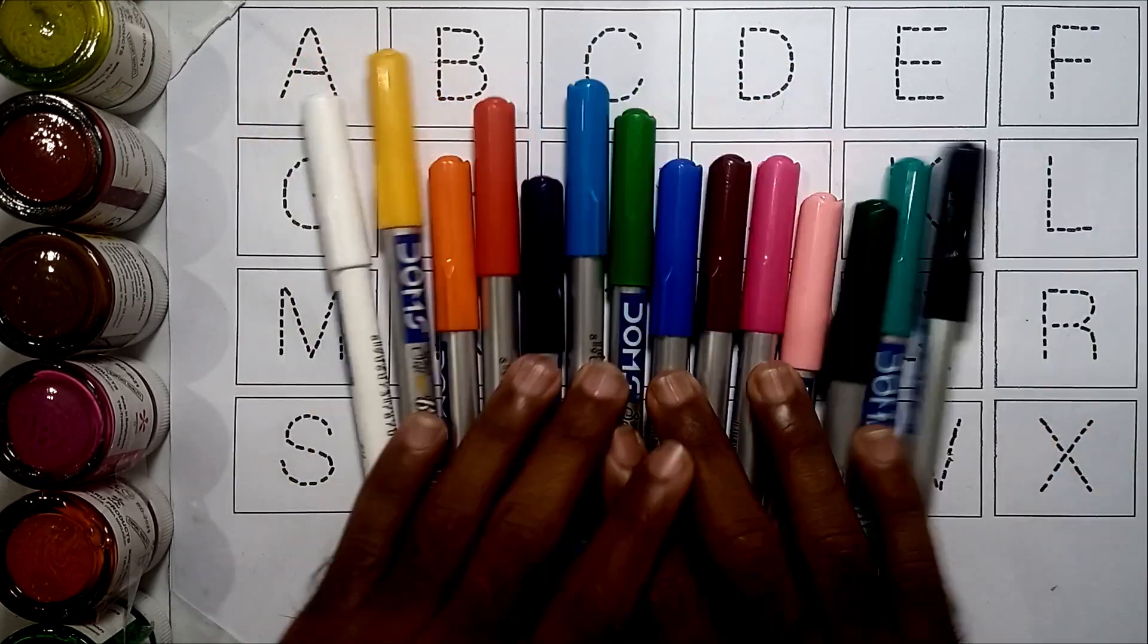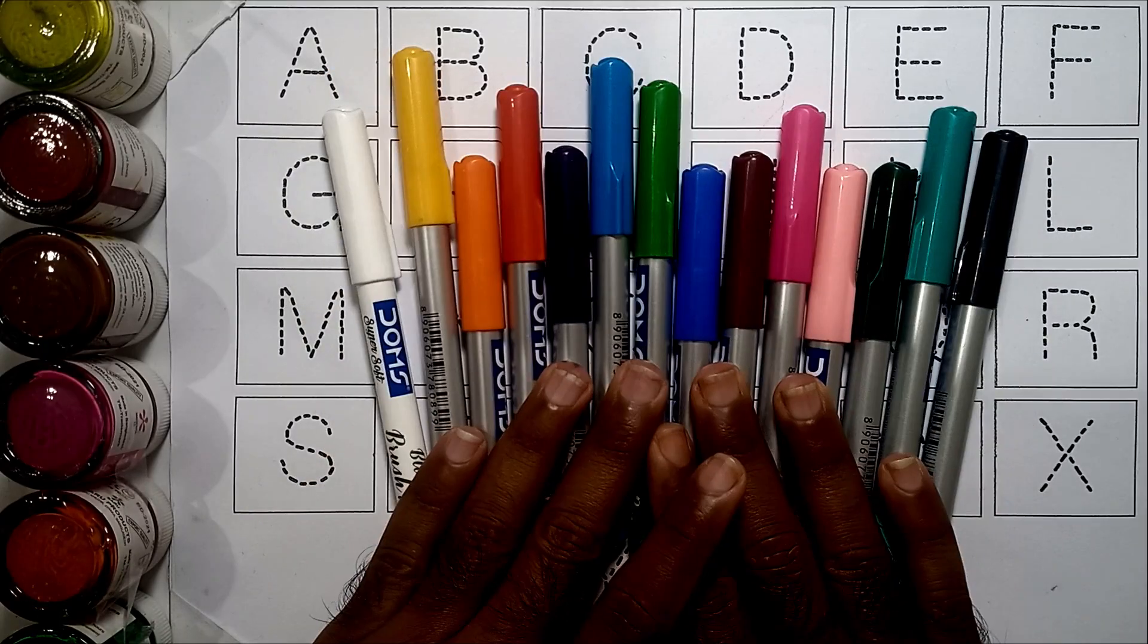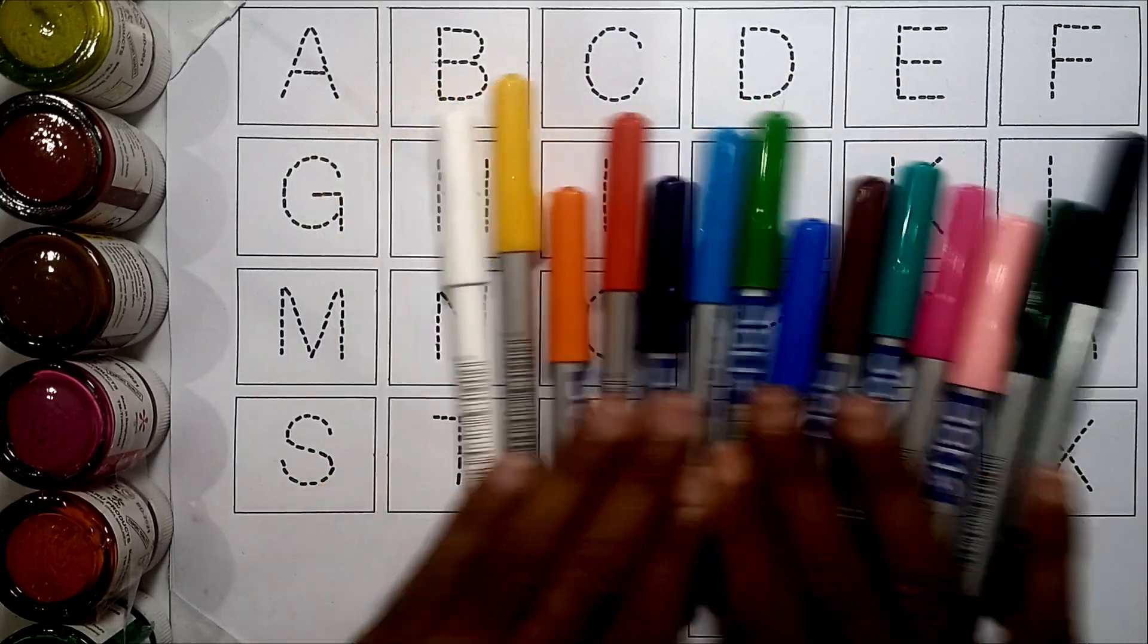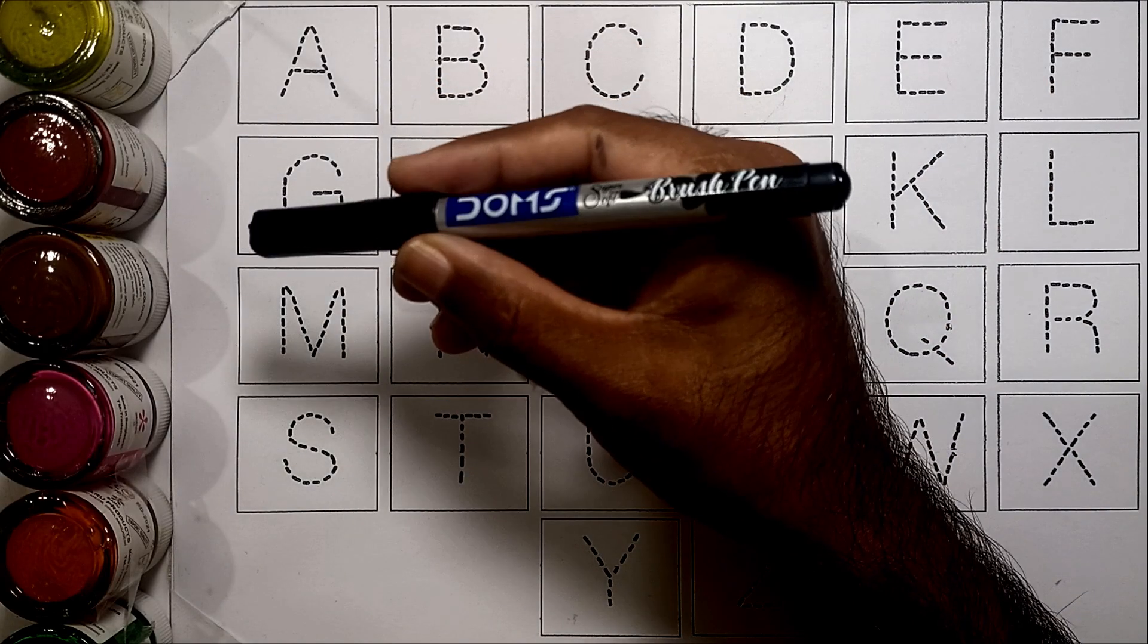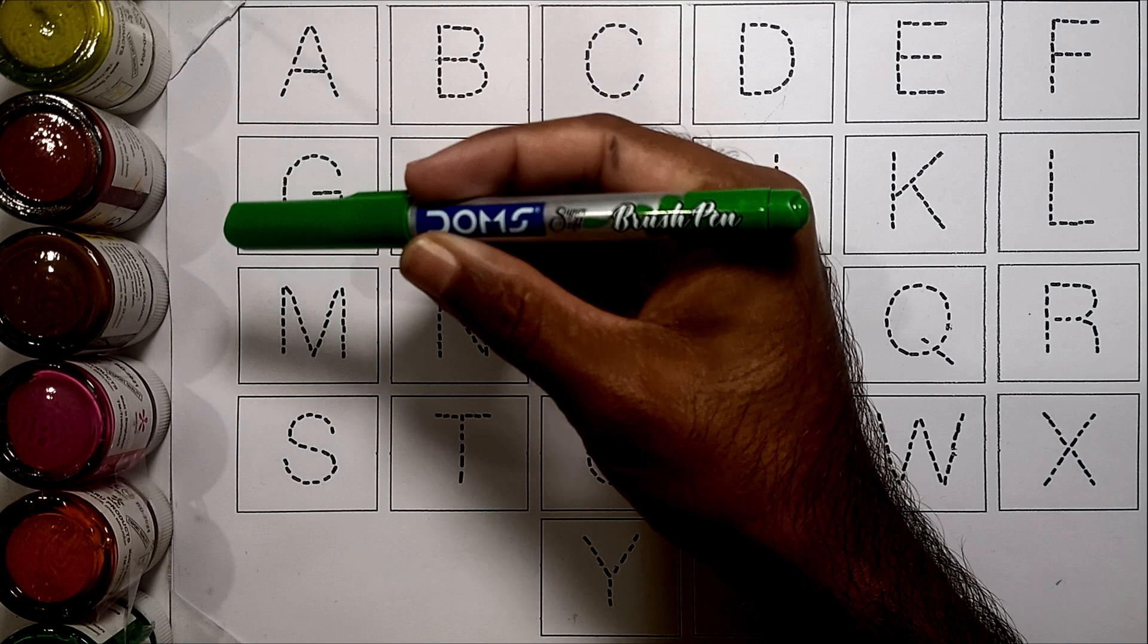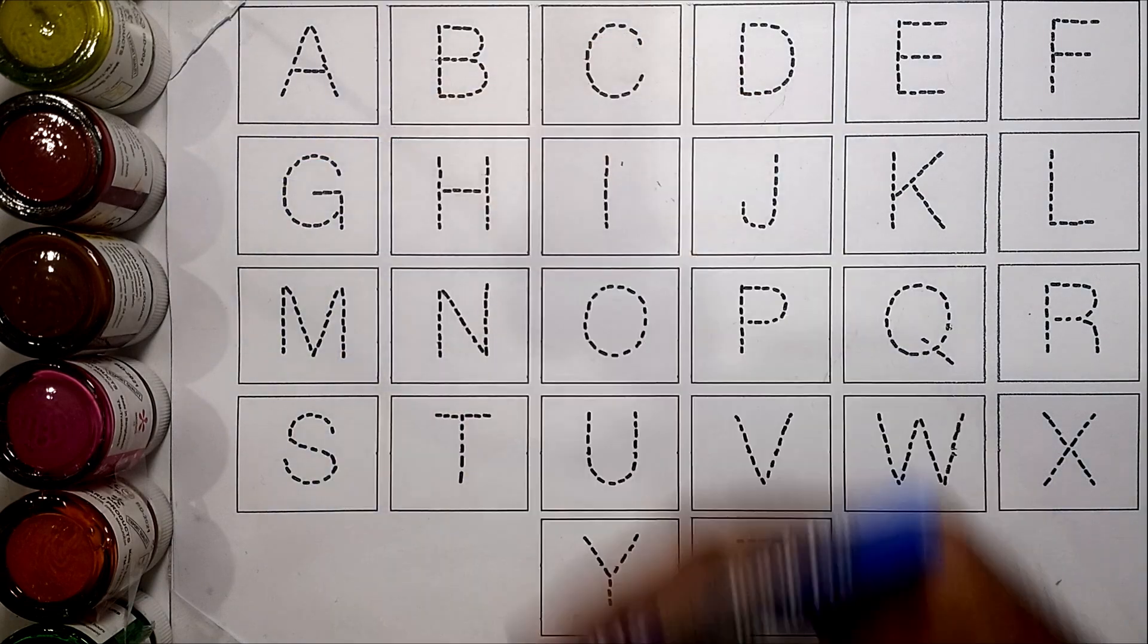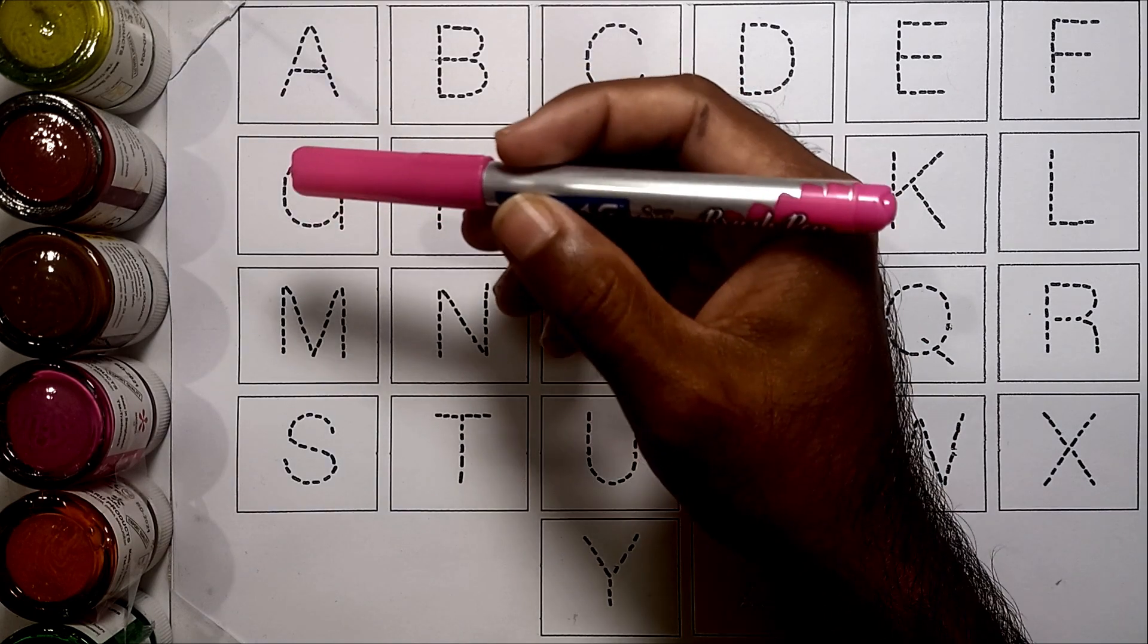Hello kids, today we learn alphabet A to Z with your favorite YouTube channel. Let's get started! Black color, green color, sea green color, yellow color, sky blue color, blue color, brown color, red color, purple color, orange color.